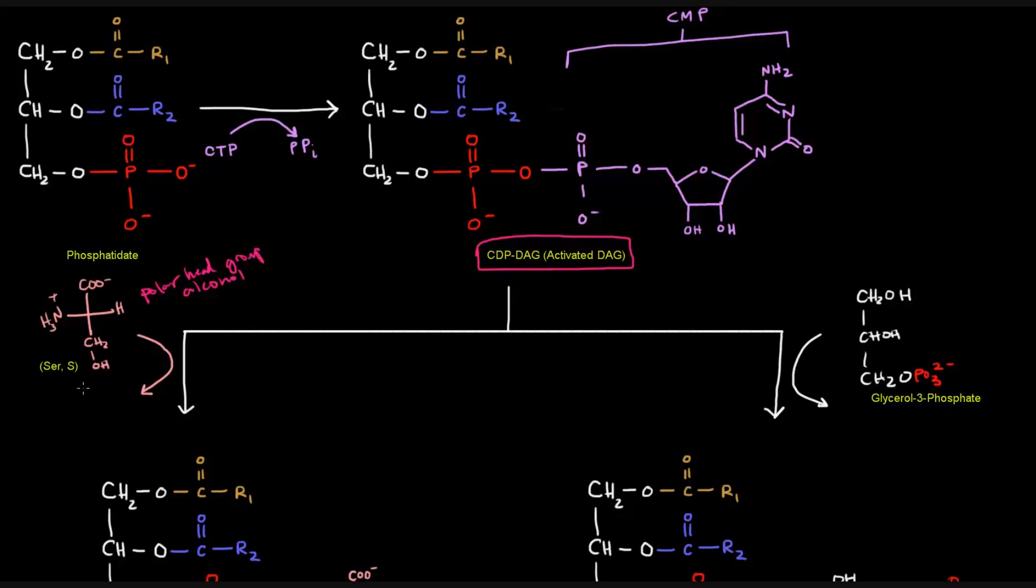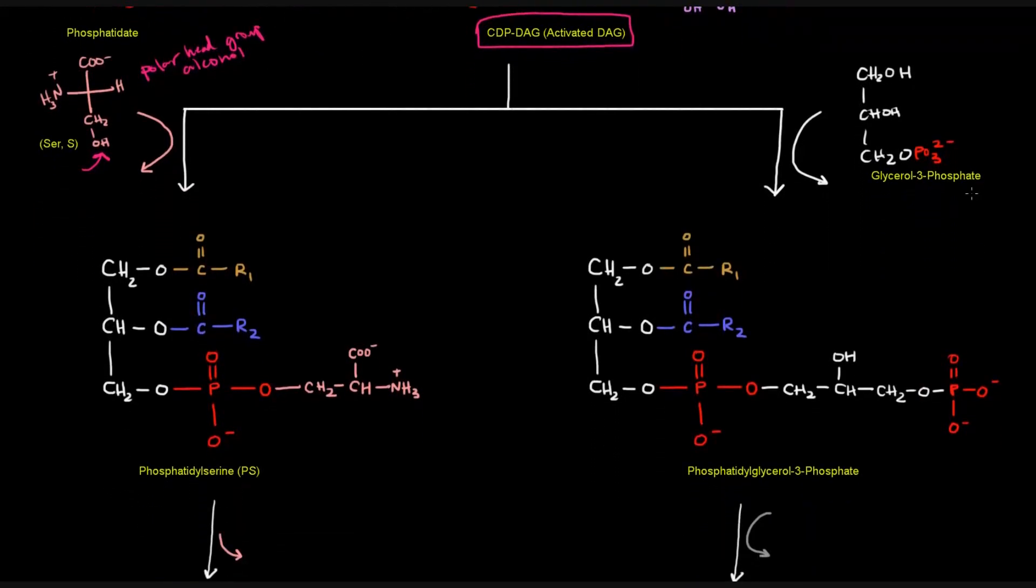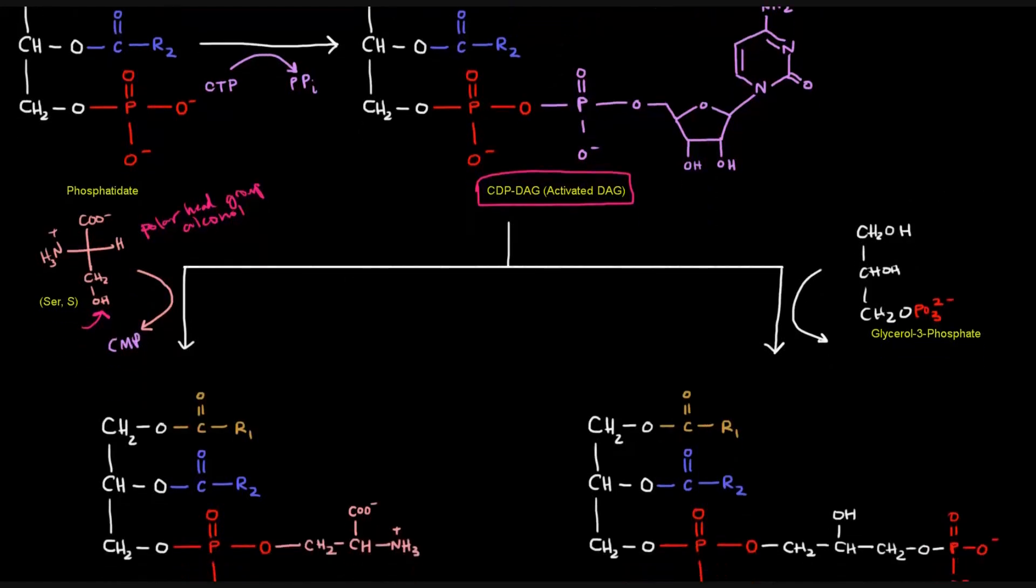This is the polar head group alcohol that we're adding here. The alcohol specifically that's going to be connected is right there, the OH group on the serine. What's going to happen is that part is going to be attached. That's going to actually attack the phosphate, the red phosphate group of phosphatidate in the CDPDAG. This OH is going to be connected, or this O from this OH is going to be connected to this P to give us this molecule here.